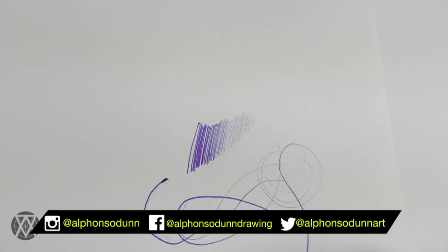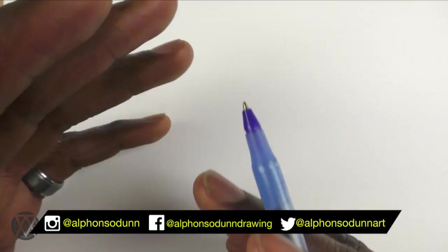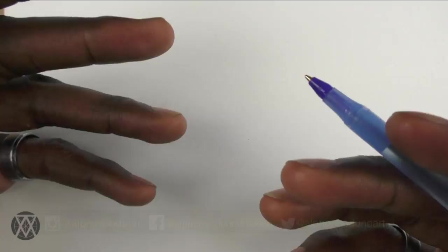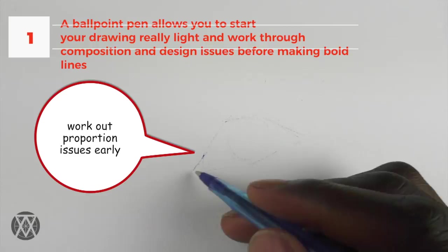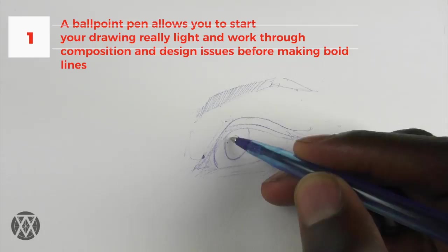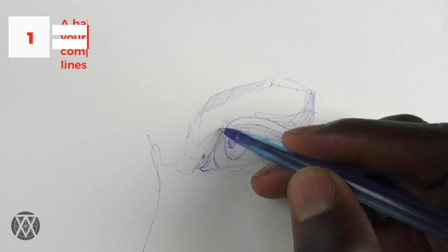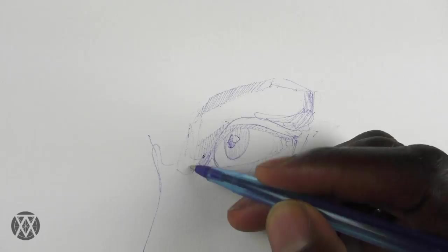One of the main advantages we get by being able to draw really light lines with a ballpoint pen is that we can lightly work through composition and design issues. We can work out proportions, poses, and gestures without leaving deep marks on the paper. Then later on, we can correct them or just draw over them, and all the sketch lines and composition lines will eventually vanish underneath as we work over them.